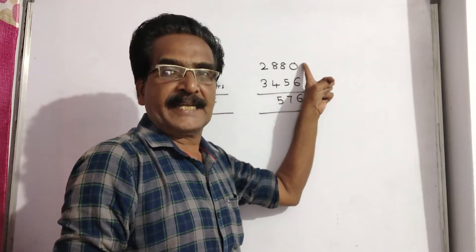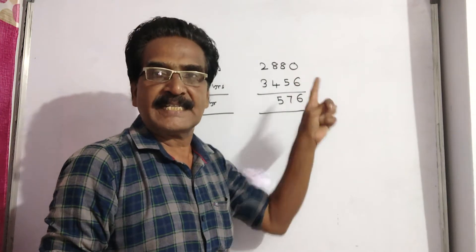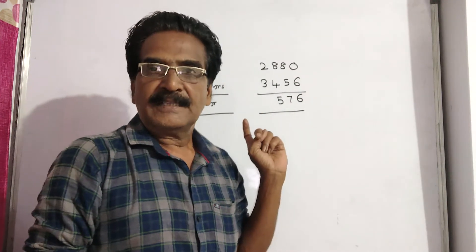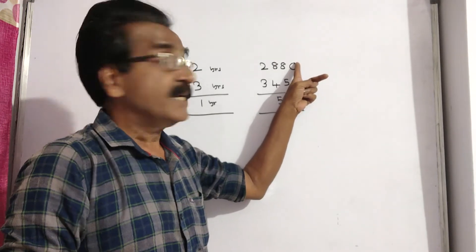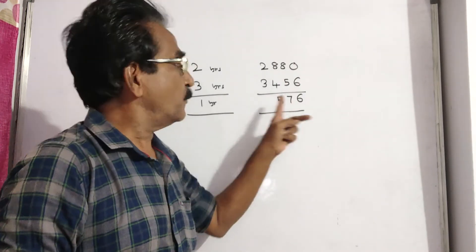Friends, 2880 becomes 3456 in 1 year. That is, interest on 2880 for 1 year is Rs 576.